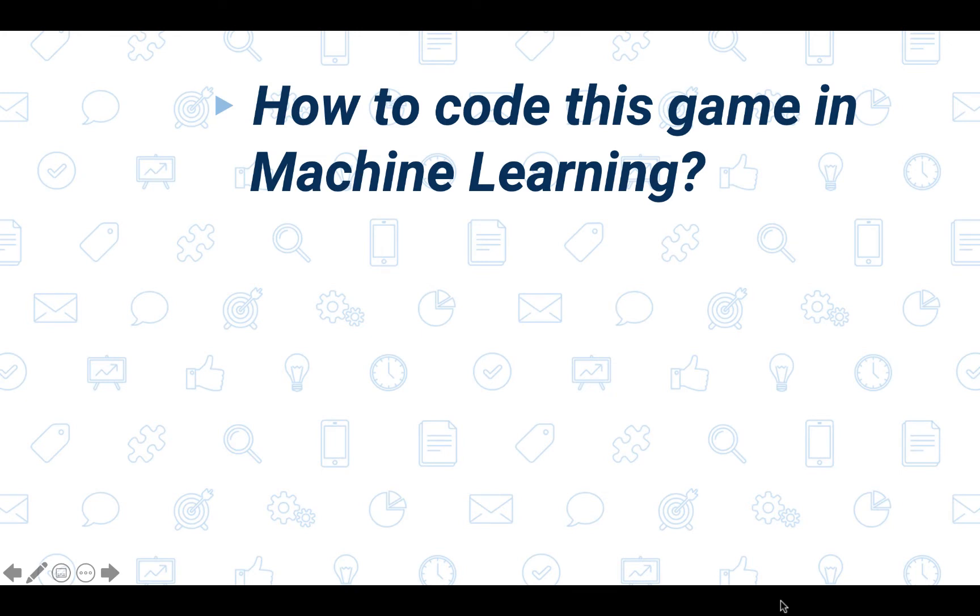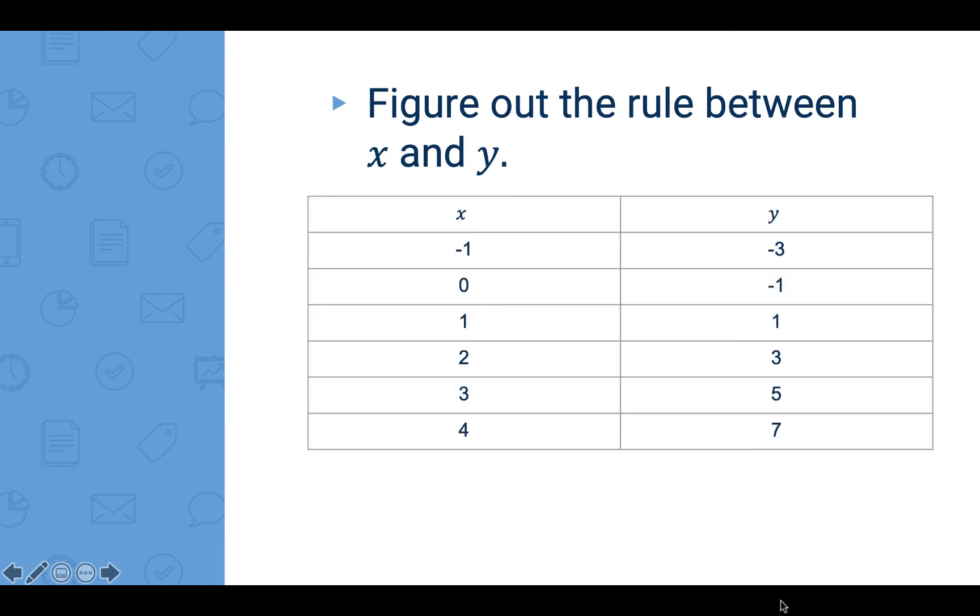If you use machine learning to code these games, what are the differences? Before we answer this question, I want to give you an exercise. Can you figure out the relationship between the x and y in this table? The answer is y is equal to 2x minus 1.